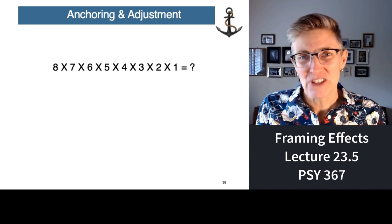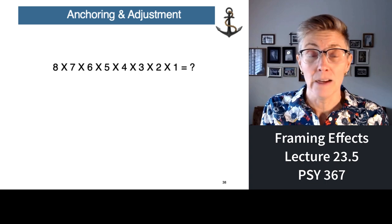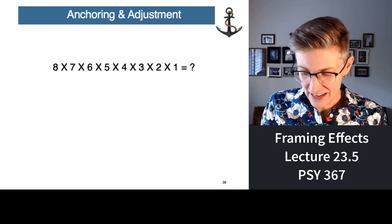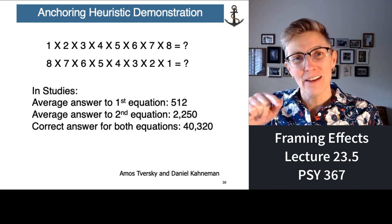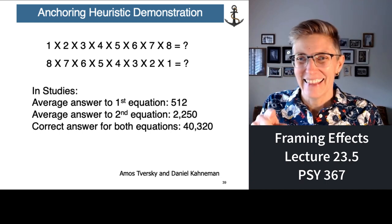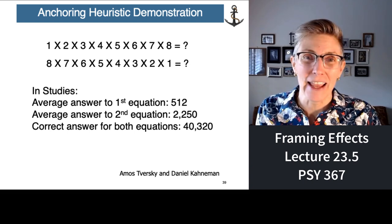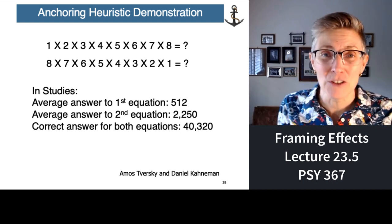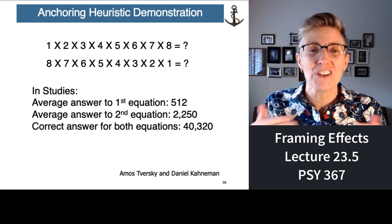If the bigger numbers come first — 7 times 8 is 56, 56 times 6 is already a big number — you'd guess maybe 2,000. The first numbers we see anchor our estimates. People given the big-numbers-first order give an answer four times larger on average than those given the small-numbers-first order, even though the equations are identical. The actual answer is incredibly different from anyone's average guess, but the key point is the anchoring effect.